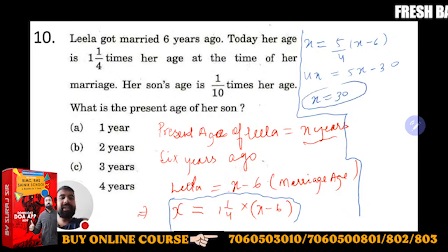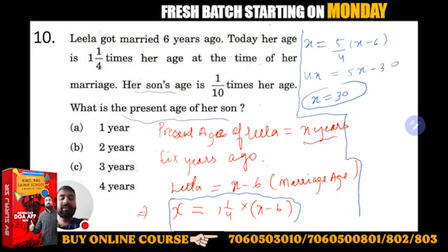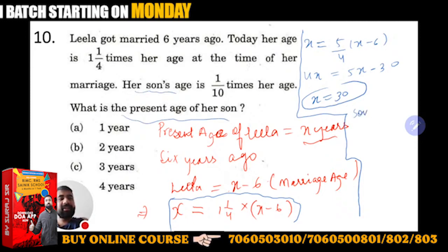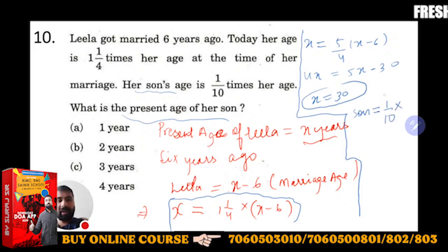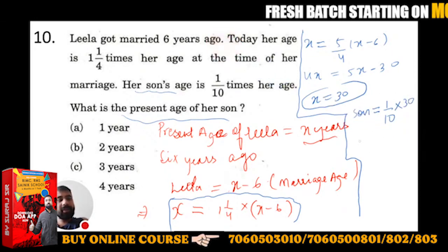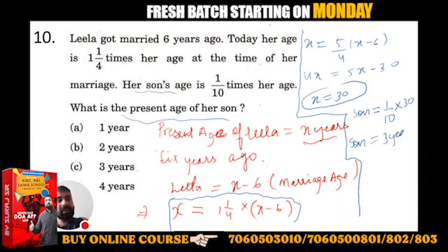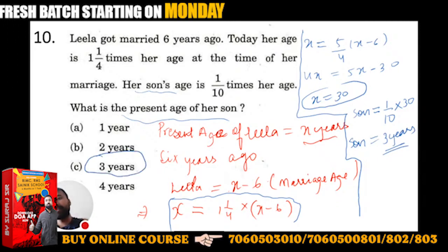What we have to find is the present age of her son. Son's age is equal to 1 by 10 times of her age. So 3 years is the right answer. This is a simple question.